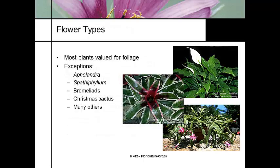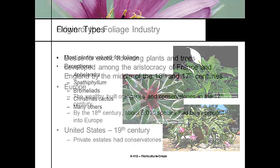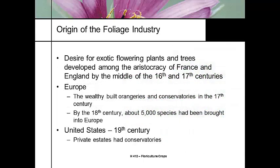Most of the foliage plants we're looking at, we're primarily interested in the foliage, but there are a lot of them where we're also looking at their flowers. Aphelandra, spathiphyllum, bromeliads, Christmas cactus — lots of others are very common where we're looking at both the foliage and the flowers.